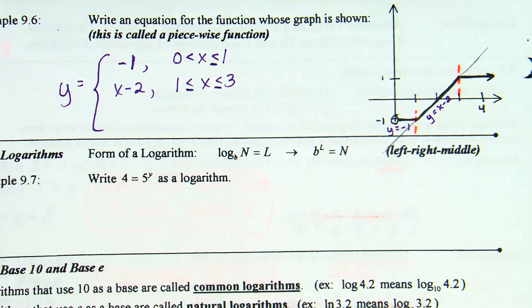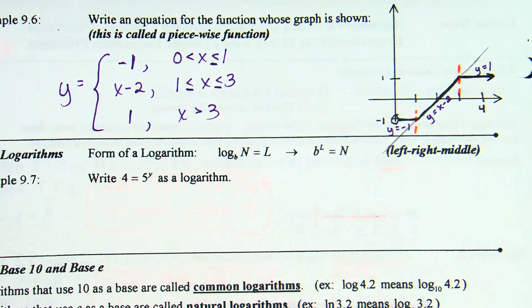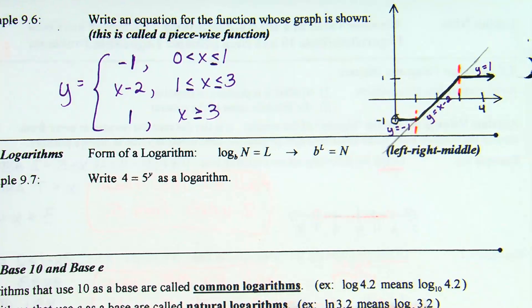The last piece is a horizontal line through positive one: y equals 1. It's valid for x greater than 3, or you could say greater than or equal to 3 — it's flexible since the previous piece already defined x equals 3. That is a piecewise function. You may not have written one before, but you've probably seen them.